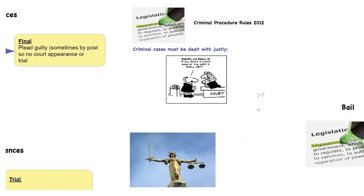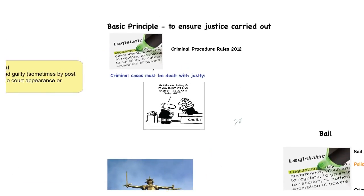Let's start by looking at the procedure — how do cases get to court? The first thing to note is the basic principle that procedure has to ensure that justice is carried out and that criminal cases especially must be dealt with justly. We all as members of society have to be comfortable that if we find ourselves in the criminal court system, no matter where we are in the country, no matter who is deciding our guilt or innocence, that will be done fairly and justly. If that doesn't happen, the whole faith in the system collapses.